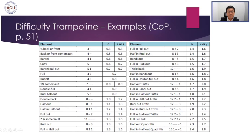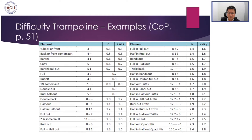Here are more examples. The way we calculate difficulty is based on the equations and developing rules and regulations we discussed. For details, you may refer to the Code of Points, page 51, which has more examples for illustration. Now we move on to another important part: how to recognize and record the skills. Many new judges may find it difficult to use the FIG numeric system.